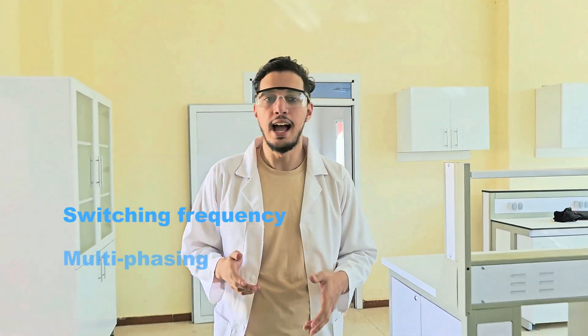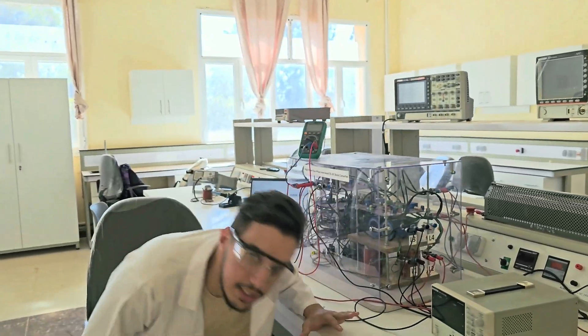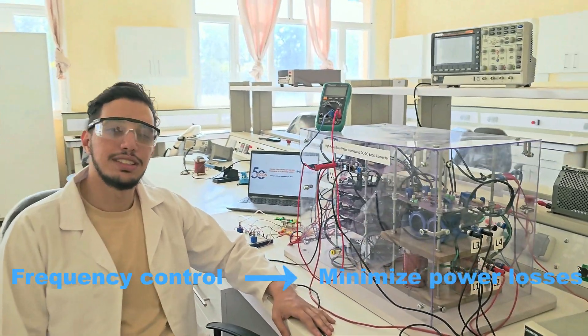Regarding multiphase DC converters, our paper provides a detailed mathematical power loss model. It answers the questions of how frequency, multiphasing, and phase-shifting affect efficiency in reality. By the end of our investigation, we were also able to discuss the possibilities of frequency control to minimize losses.